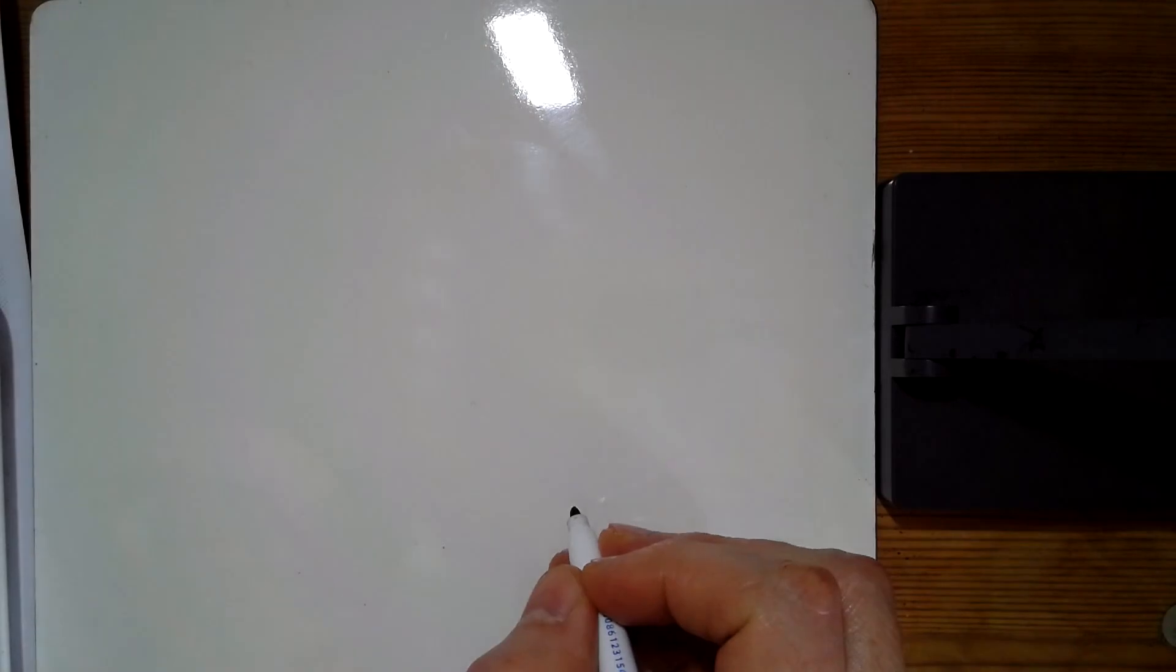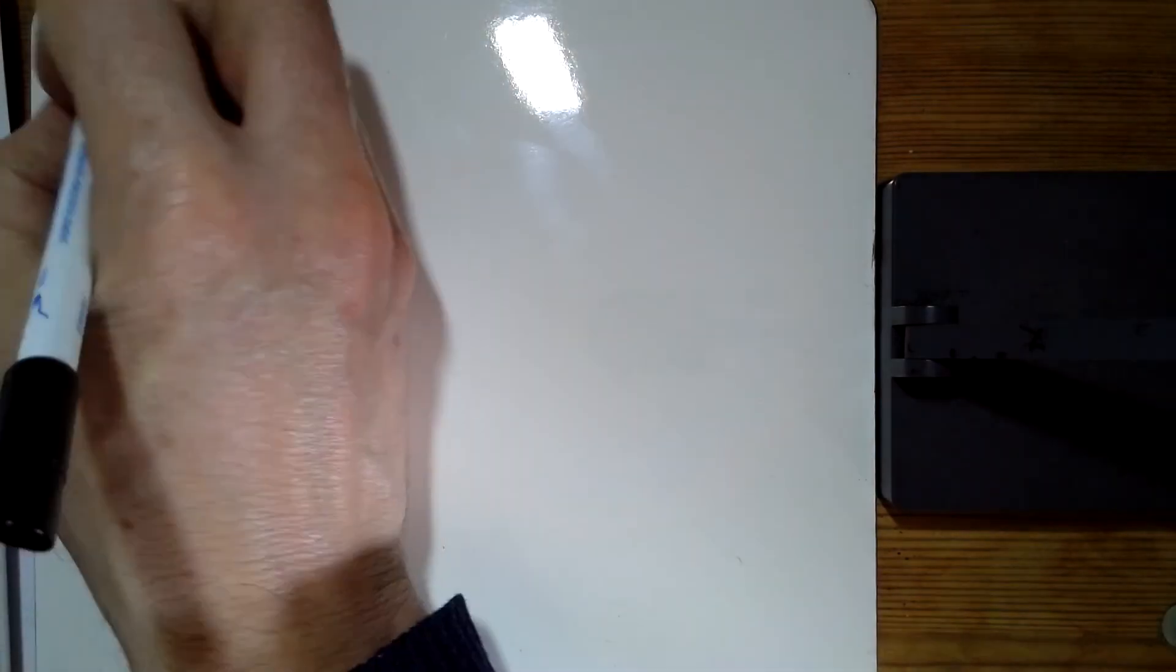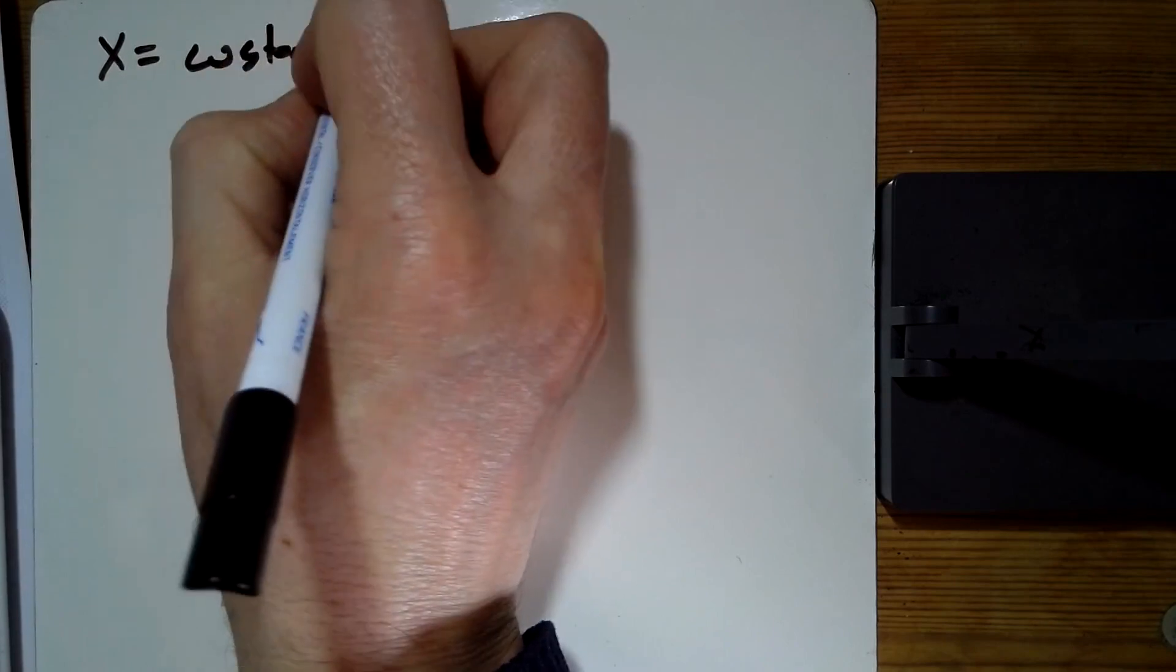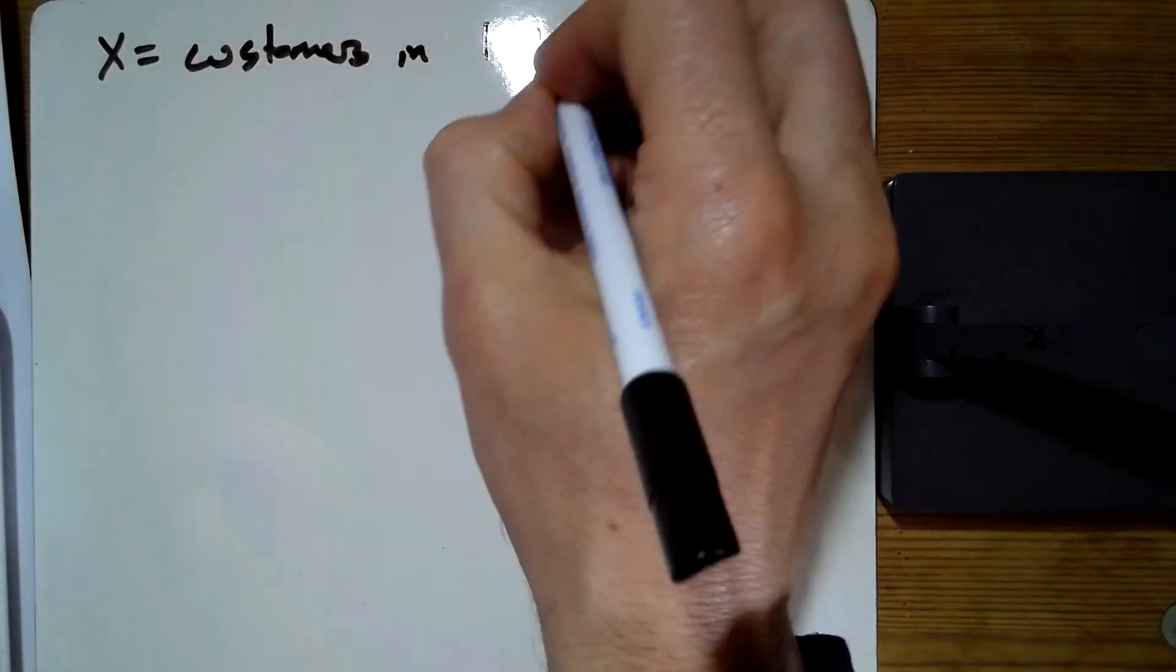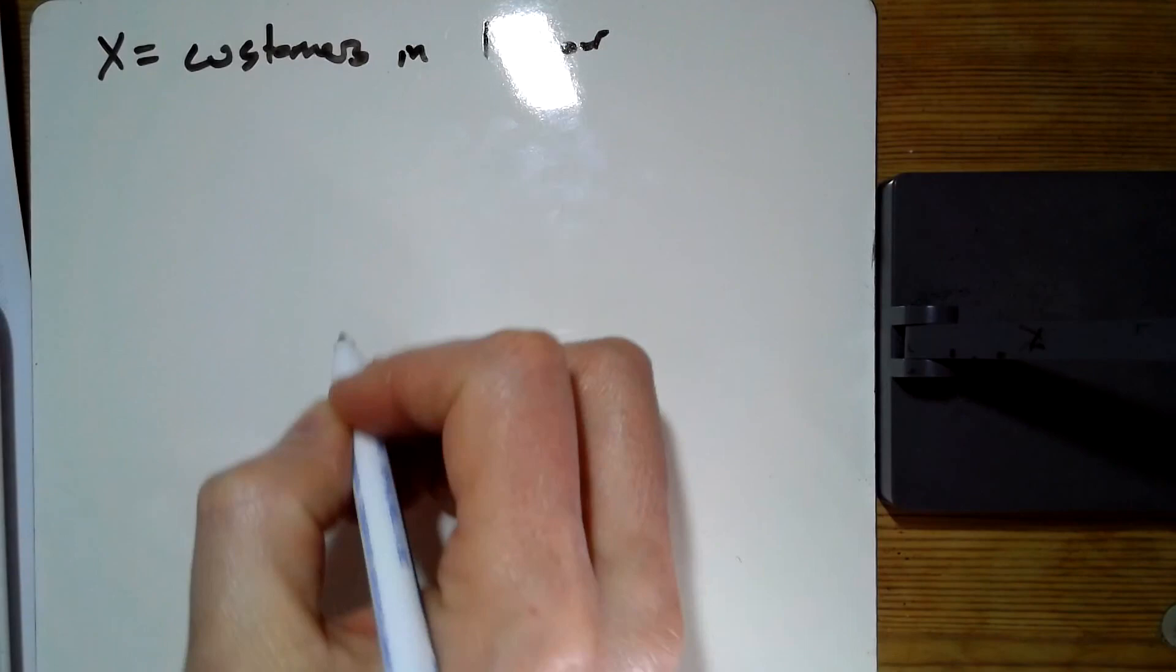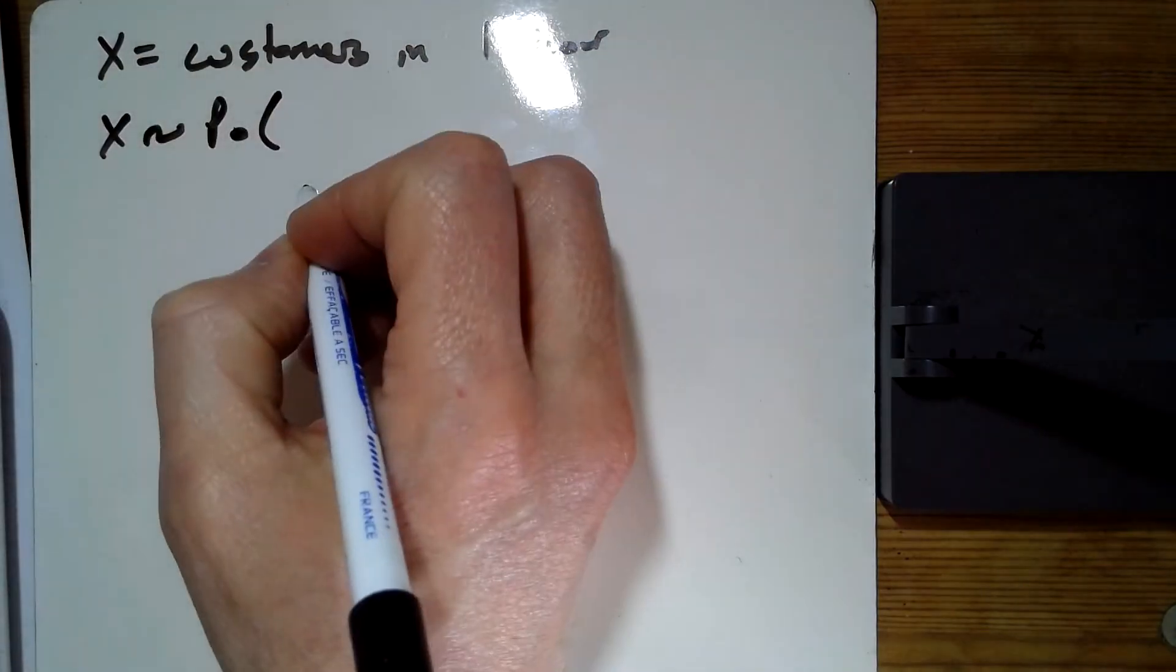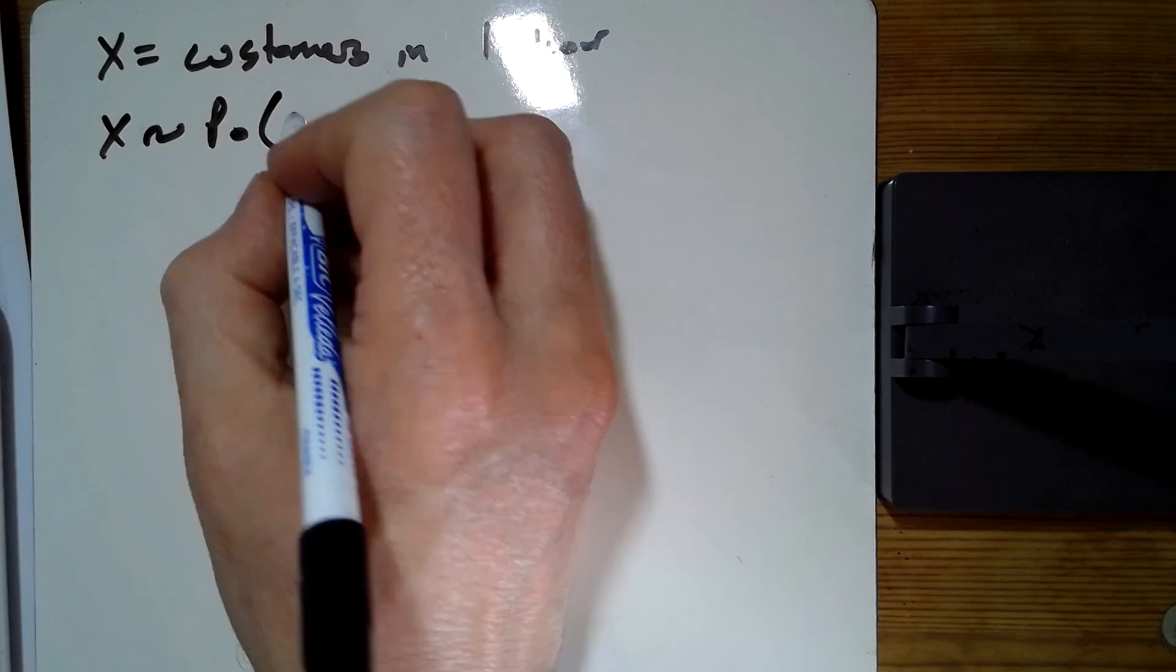Question one is a standard Poisson question, and we're getting two every five minutes. So X equals customers in one hour. X is Poisson, and if you get two every five minutes, that means you get 24 in the hour.